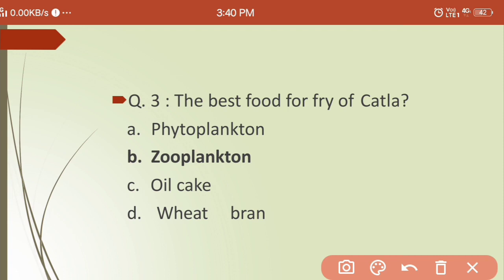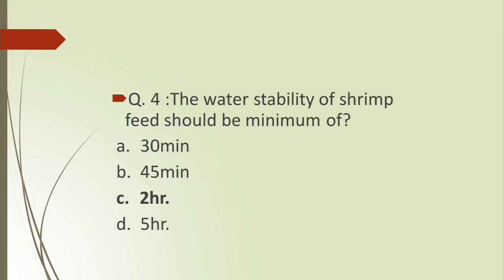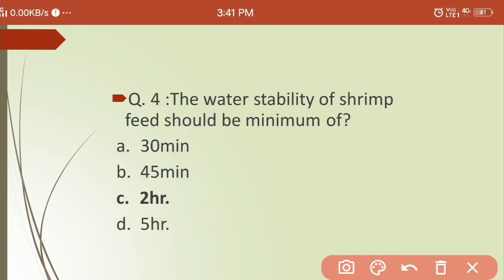Third question: what is the best food for fry of katla? Options are: (a) phytoplankton, (b) zooplankton, (c) oil cake, (d) wheat plant. The answer is zooplankton — zooplankton are given to the fry of katla.